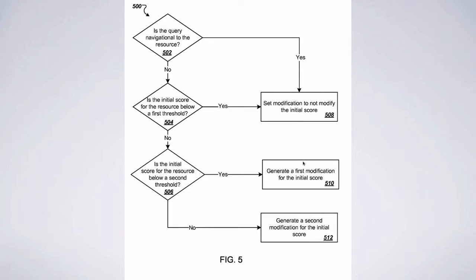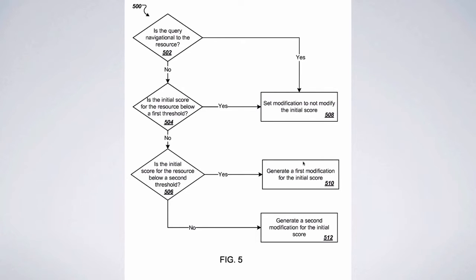Here is the modification factor — the penalty portion everyone is concerned about — starting with a question: is the query navigational to the resource? Meaning, is somebody typing in 'Apple' because they want apple.com, or 'Amazon' because they're looking for Amazon? If the answer is yes, the algorithm does not modify the initial score. If the answer is no, you start moving toward modification factors specific to the group of resources. So there are specific modifications depending on the topic of the query, and if you fall into a heavy modification score, you're less likely to be found in early search results.